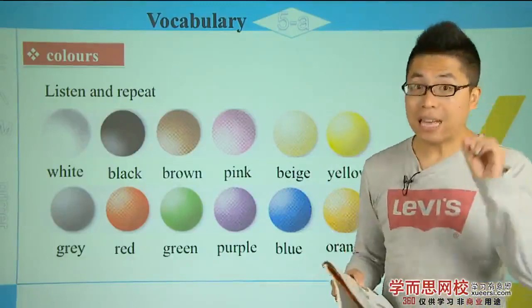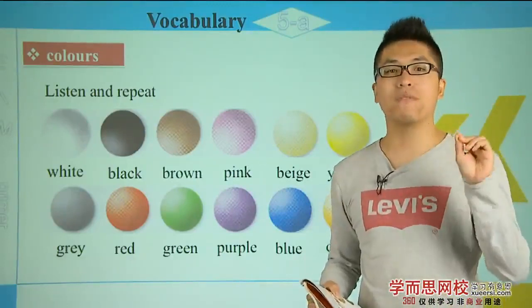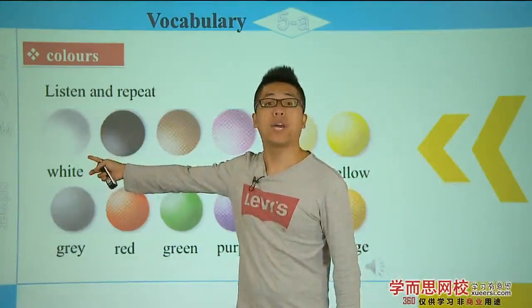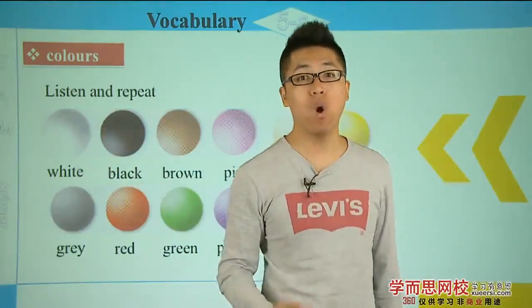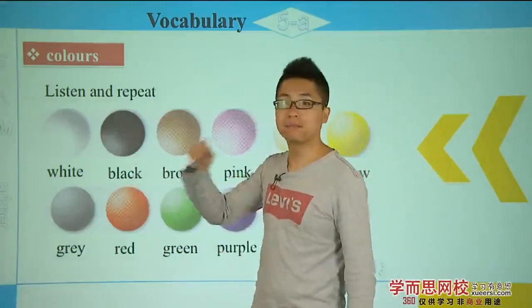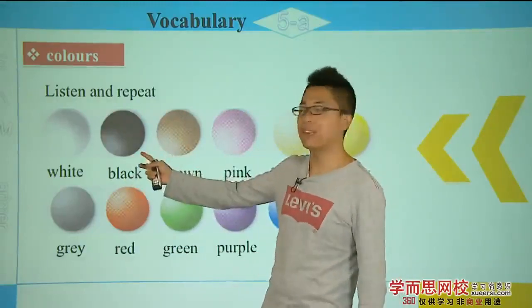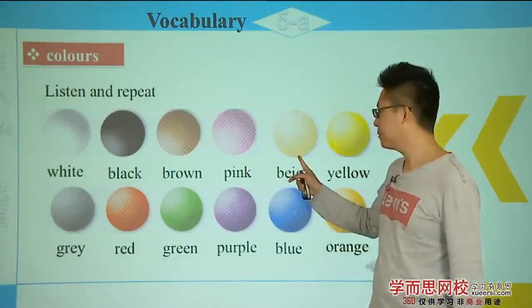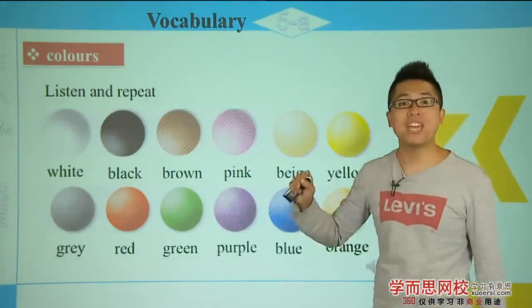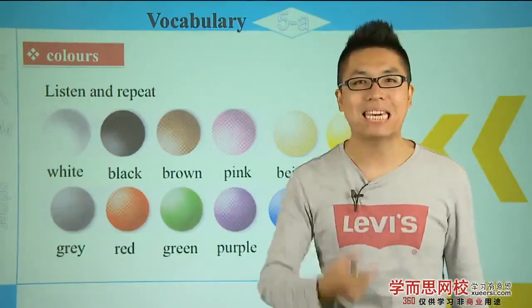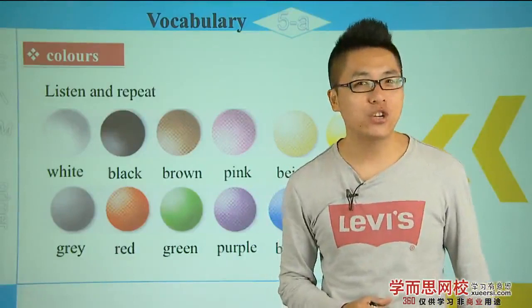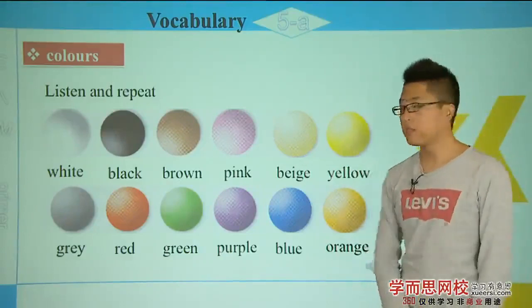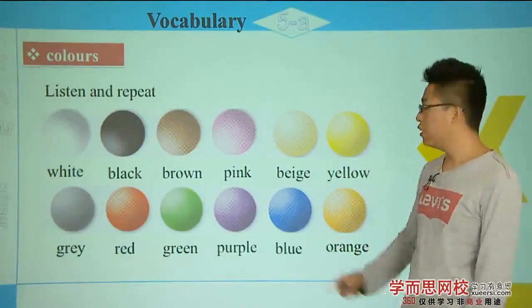Let's read the colors again and remember them, because they will be very useful for describing people. Starting from number one: white, black, brown, pink, beige — look at my mouth, beige — yellow, gray, red, green, purple, blue, orange. Note that yellow and beige often appear together: yellow is dark, but beige is light.